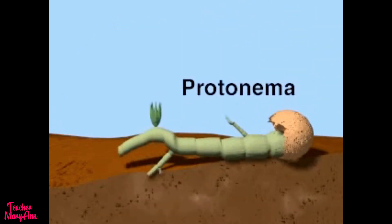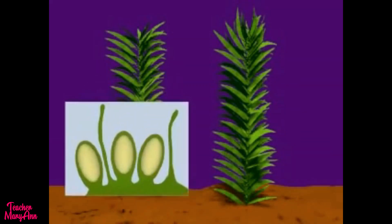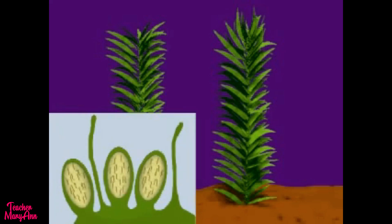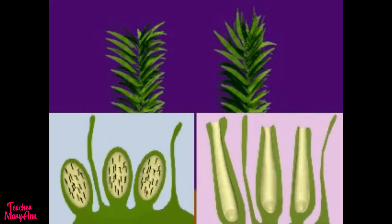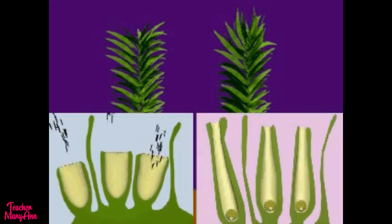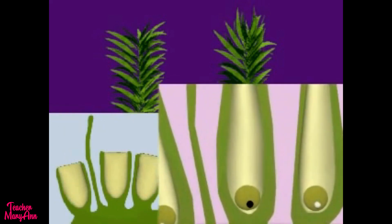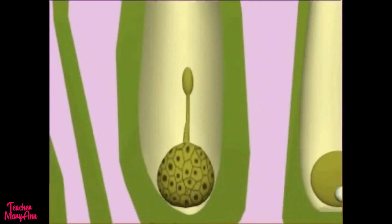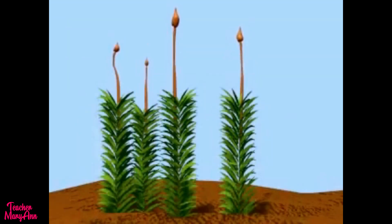A spore germinates to form a protonema. The antheridium develops on the male gametophyte; sperm form within the antheridium. The archegonium develops on the female gametophyte; an egg forms within the archegonium. Sperm are released from the antheridium and swim to the archegonium. Fertilization takes place inside the archegonium and a zygote is formed. The zygote divides by mitosis to form a new sporophyte in the form of a stalk and capsule.